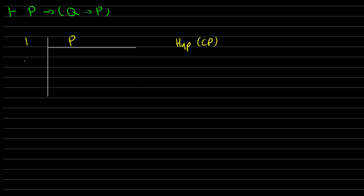In line two we're going to assume Q for a CP. The reason we're doing this is because first we have to assume this left thing to get Q→P, but then we also have to assume Q to do Q→P. In line three I'm going to reiterate P from line one — so that's reiteration.